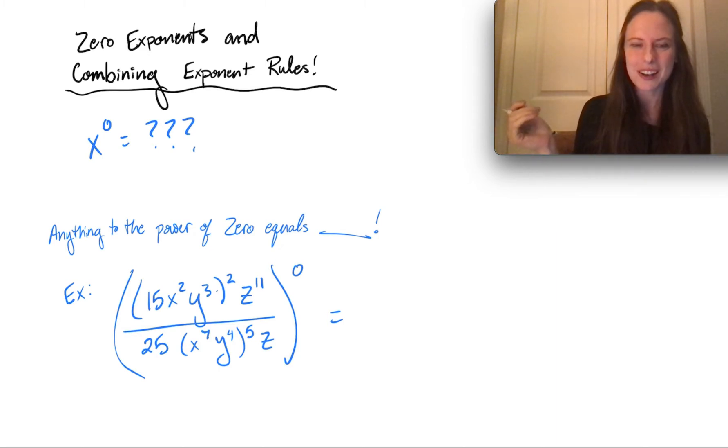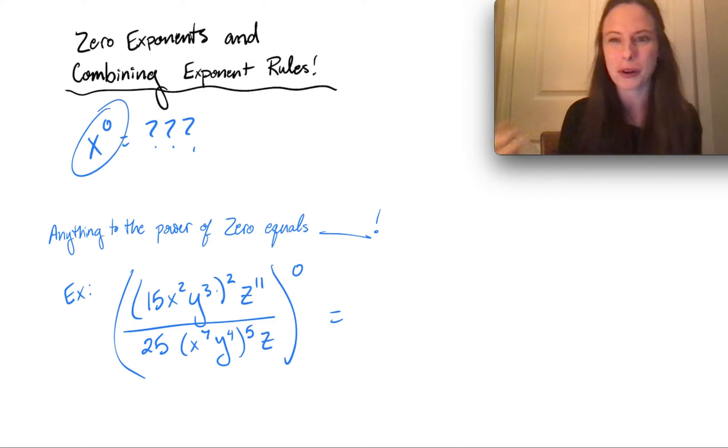So first, it's really common people see this 0 in the problem, and they kind of think of multiplying by 0, and they want to say that the answer is 0. No, this is actually not true.